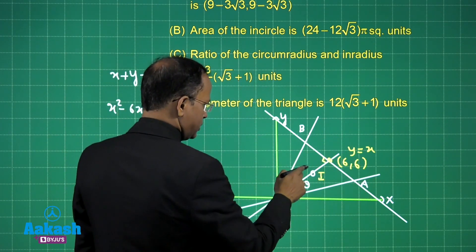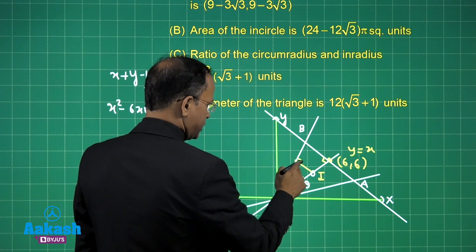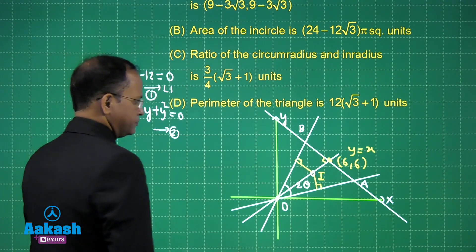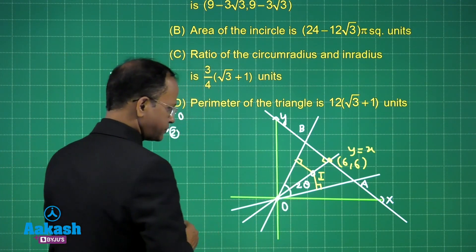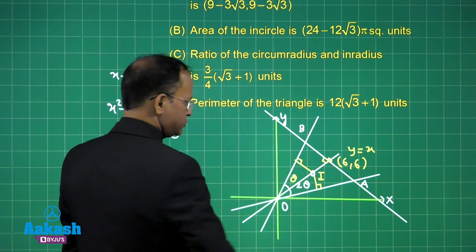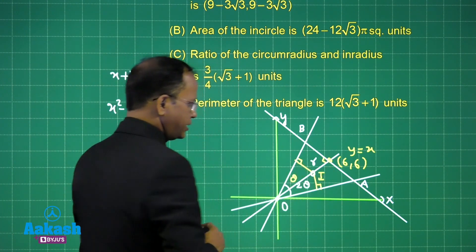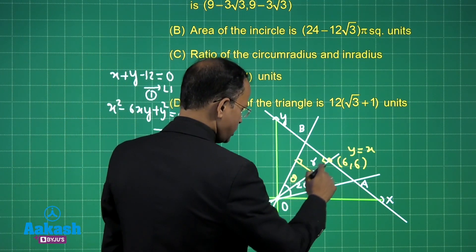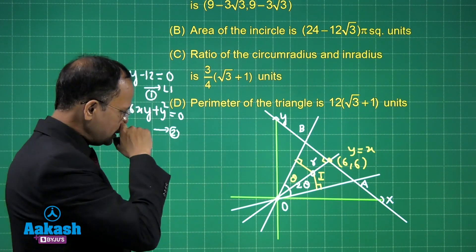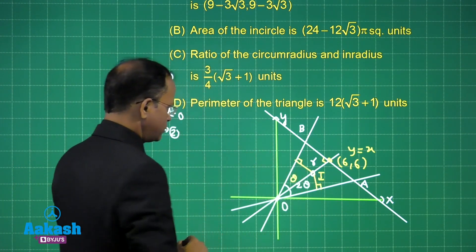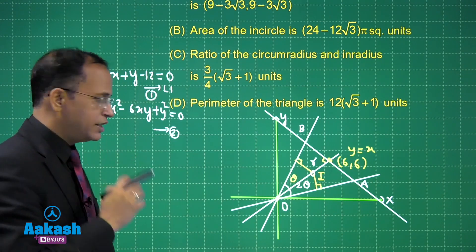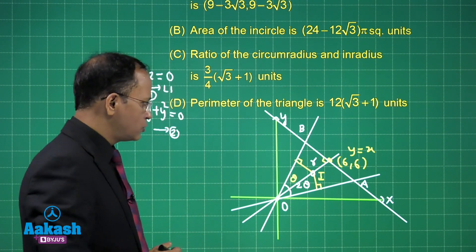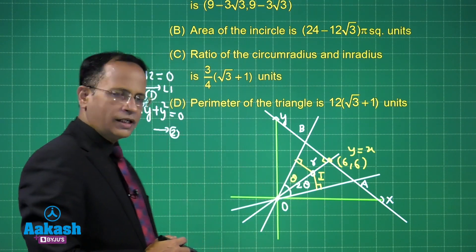We can drop perpendiculars from the incenter to each side. There is a 90-degree angle, angle θ, and the inradius r. The incenter lies on the line y = x, so we can find its value. The key interesting calculation is determining the incenter coordinates, from which all other values follow.